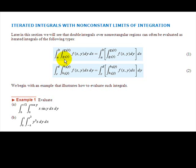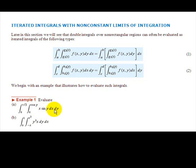Before we talk about what that geometrically represents, we're just going to very mechanically go through the steps for evaluating an integral like this. In example one, we have the integral from zero to pi over three, of the integral from zero to cosine y, of x sine y dx dy.